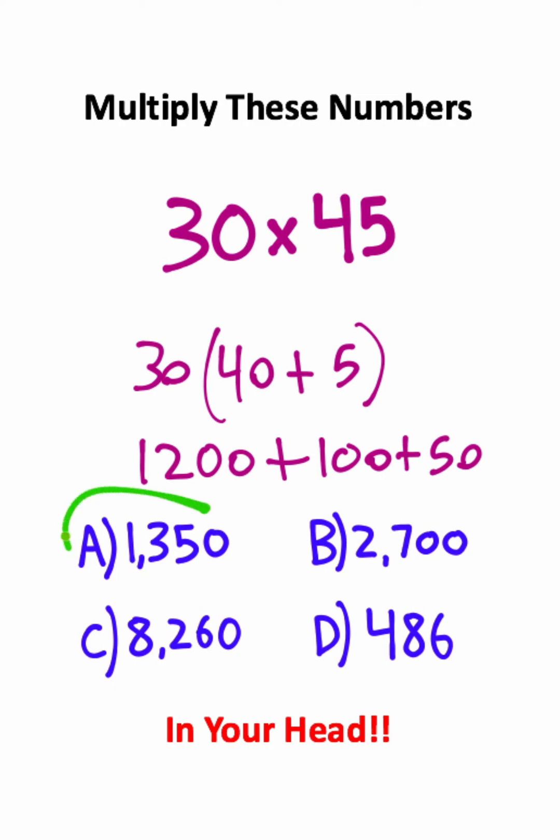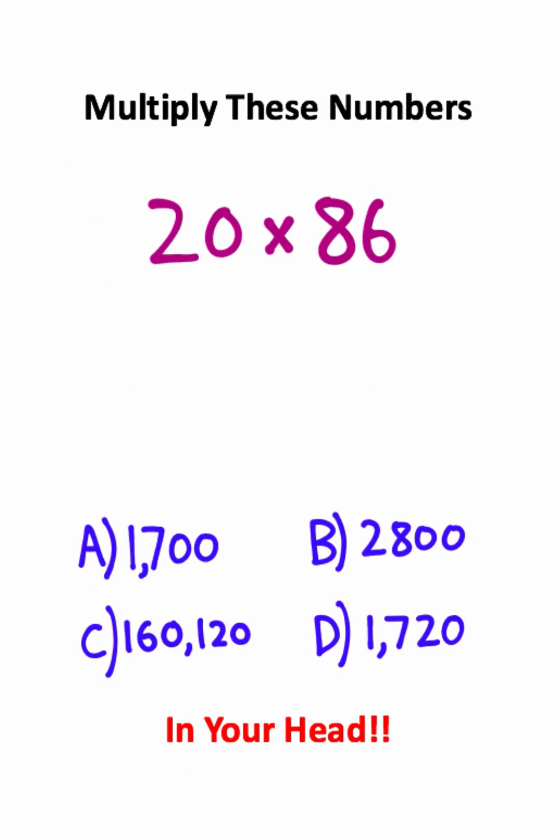That's just going to be one thousand three hundred and fifty. This is actually one of the most common strategies that I see. But that being said, using whatever strategy you would like to, I want you to try multiplying the two numbers you see on the screen. So pause this video and try solving this problem in your head.